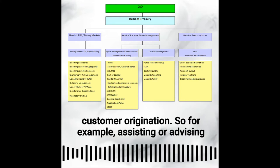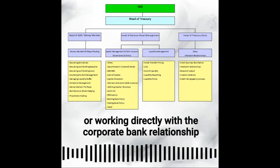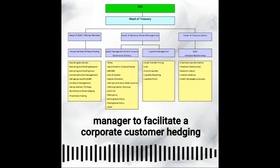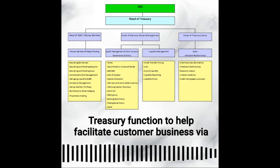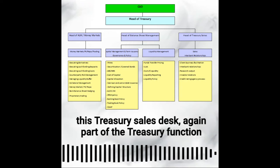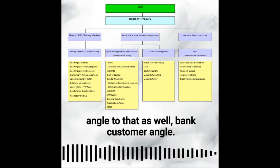So for example, advising or working directly with the corporate bank relationship manager to facilitate a corporate customer hedging transaction — for example, for foreign exchange risk management. Using the treasury function to help facilitate customer business via this treasury sales desk — again, part of the treasury function. That would also be front office treasury, but with an active customer angle to it as well.